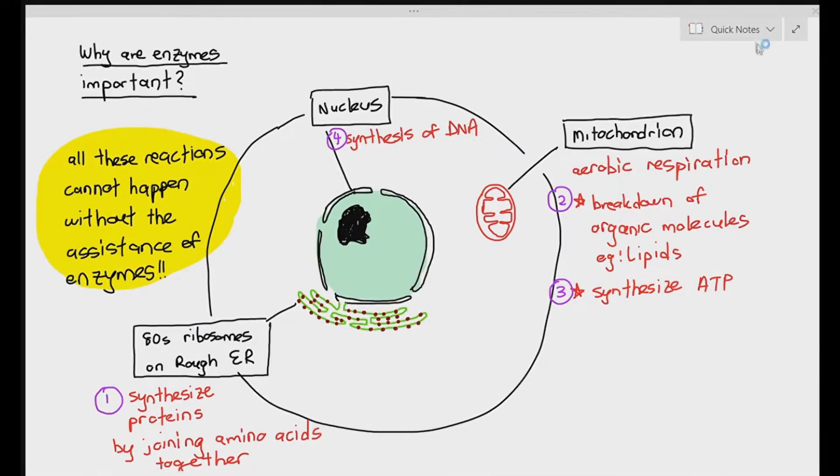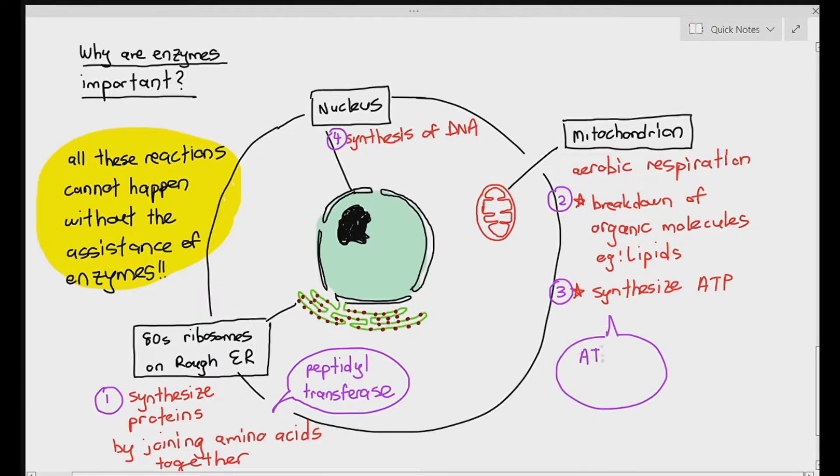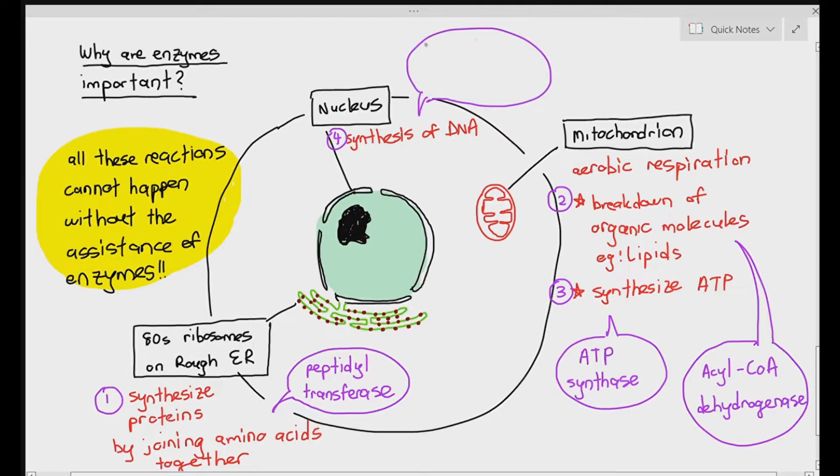All these chemical reactions cannot happen without the assistance of enzymes. And you need to have different types of enzymes to actually carry out these chemical reactions in the cells. For example, to synthesize protein, an enzyme known as peptidyl transferase is needed. To synthesize ATP, you need an enzyme known as ATP synthase. To break down lipids, you need something known as acyl-CoA dehydrogenase. And to synthesize DNA, you need two different types of enzymes known as helicase and DNA polymerase.